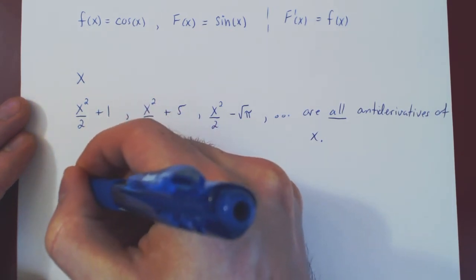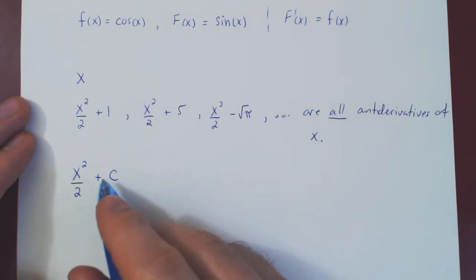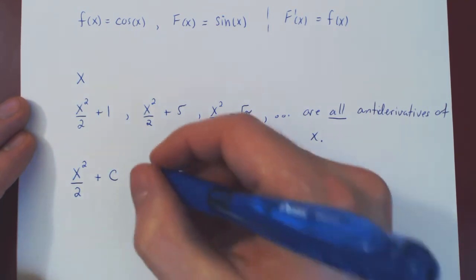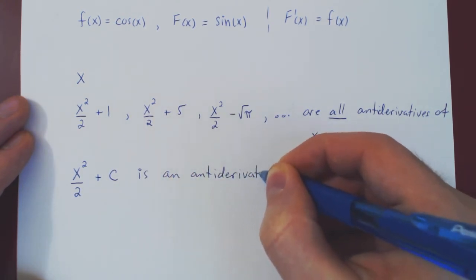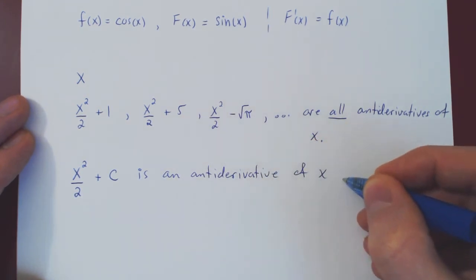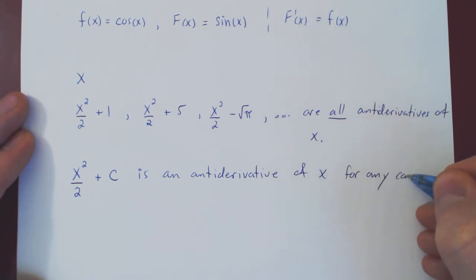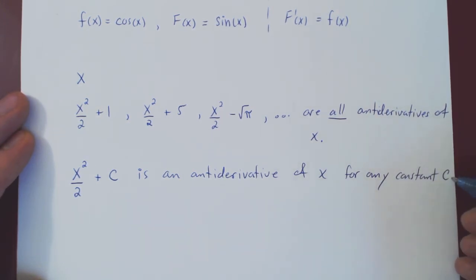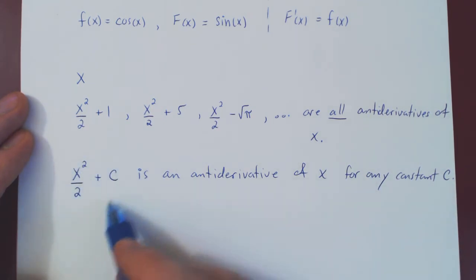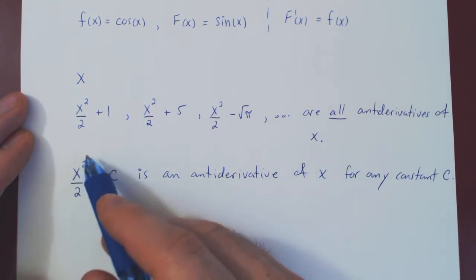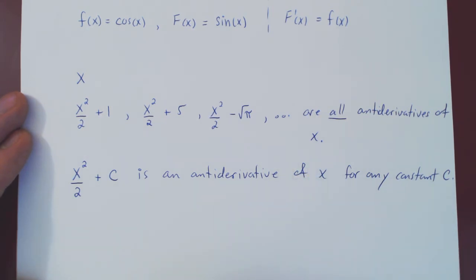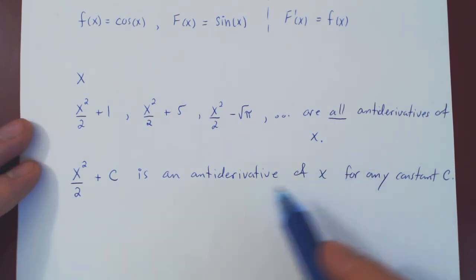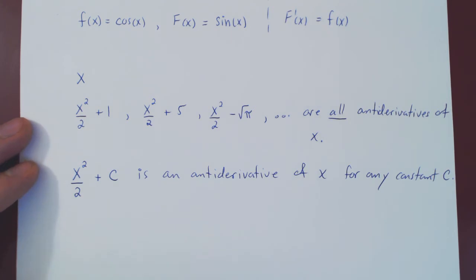So x squared over 2 plus c is an antiderivative of x for any constant c. We have found an infinite number of antiderivatives of x — differentiate x squared over 2 plus c with respect to x for any choice of constant c, and the derivative is always x. The only question left is: are all antiderivatives of x of the form x squared over 2 plus a constant? And the answer is yes.